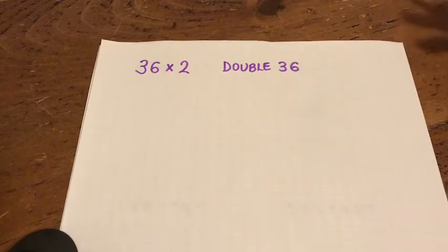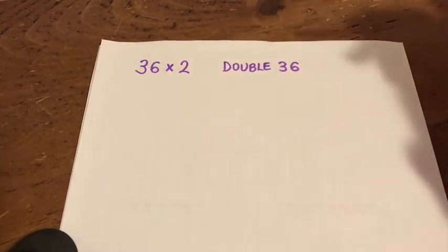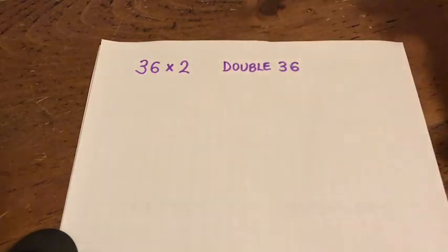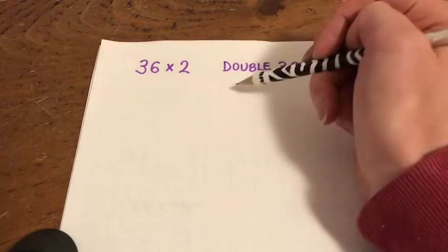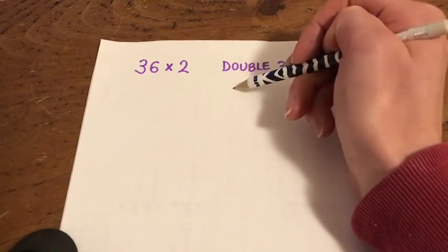So here we go with this one: 36 times 2. That's the same as double 36. Anything times 2 is the same as doubling it, so that makes it nice and easy. I'm going to write 36 down.